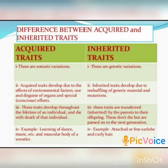These are genetic variations. Inherited traits develop due to the reshuffling of genetic material and mutations. These traits are transferred by the parents to their offspring. They don't die but are passed on to the next generation.